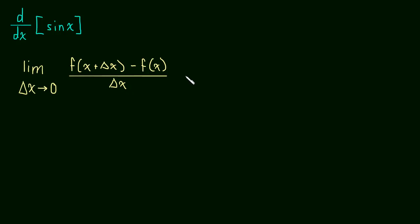So how does this apply to the sine function? Well, it becomes the limit as delta x approaches 0 of the sine of x plus delta x minus the sine of x all over delta x.